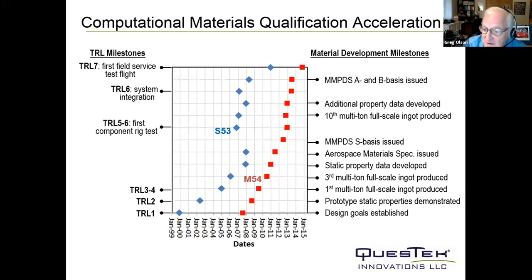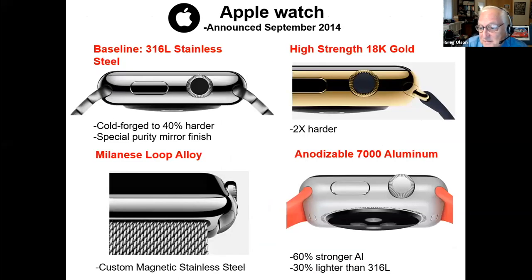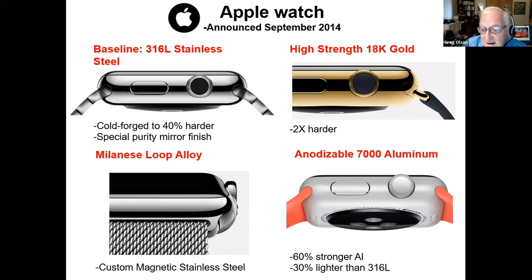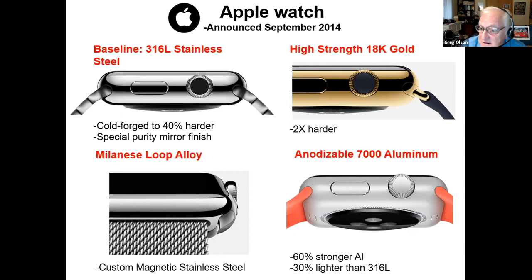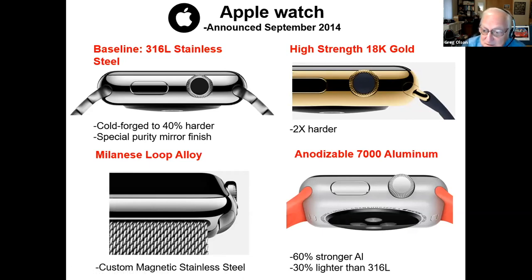A very historic example was the four new alloys that Apple announced with the release of the Apple Watch in 2014 — all significantly novel alloy designs. They were each developed concurrently with the design of those devices and delivered in less than two years from acquiring the enabling technology. The anodizable 7000 aluminum made its way into subsequent iPhones and other products. With these applications, this technology has had very broad impact in consumer products.